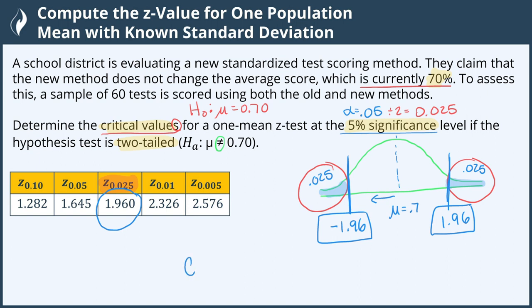So we have two critical values, a critical value of negative 1.96 and positive 1.96.